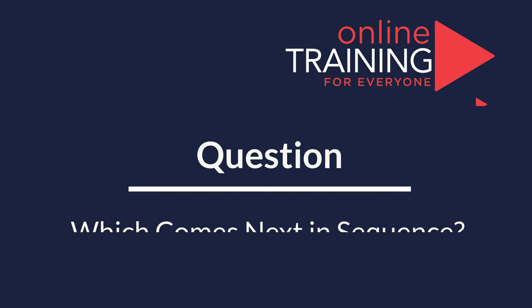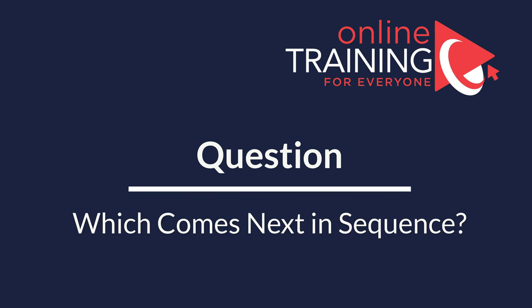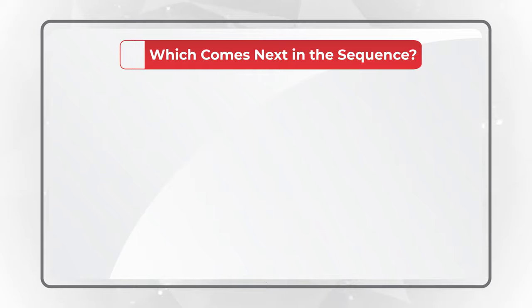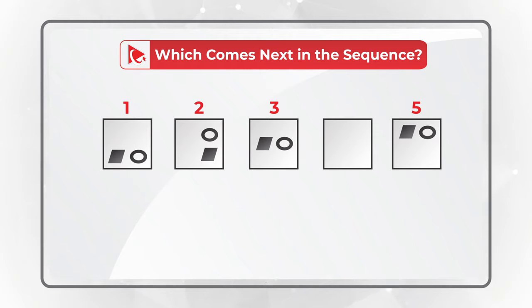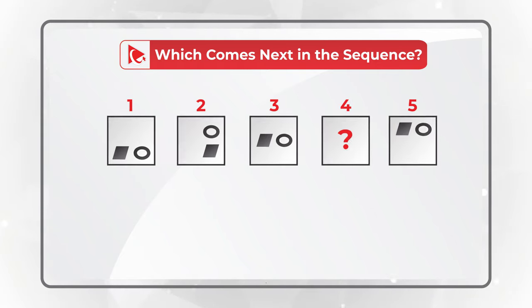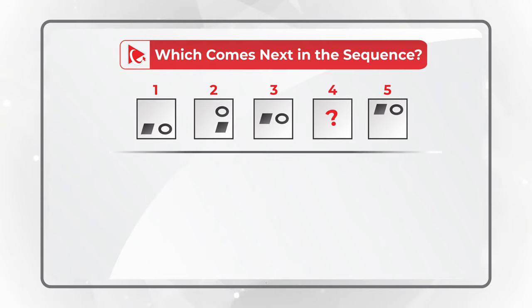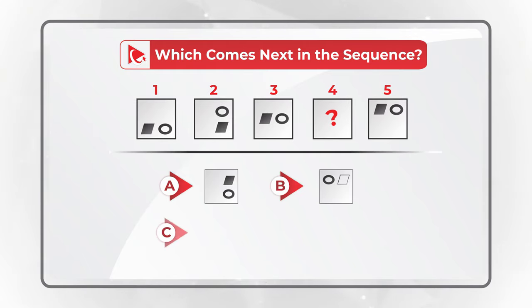I love this question because it really makes you think in order to get to the correct solution. You need to determine which shape comes next in the sequence. You're presented with a series of 5 shapes. Squares 1, 2, 3, and 5 have other smaller shapes inside. You need to determine shape 4. You have 4 different choices: A, B, C, and D.